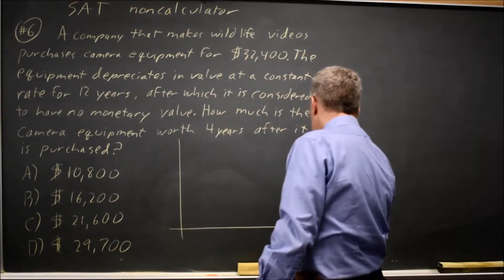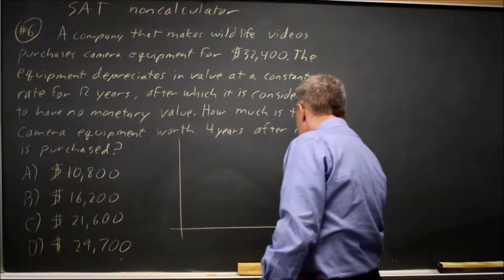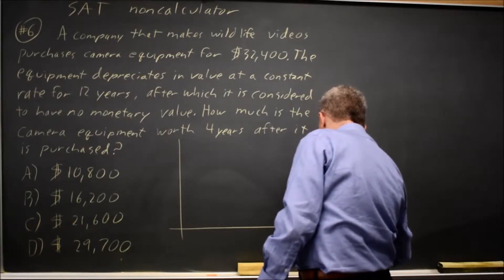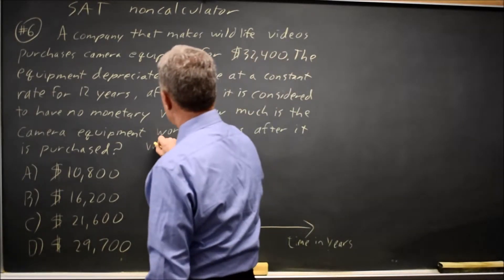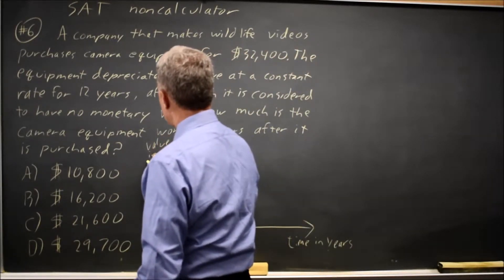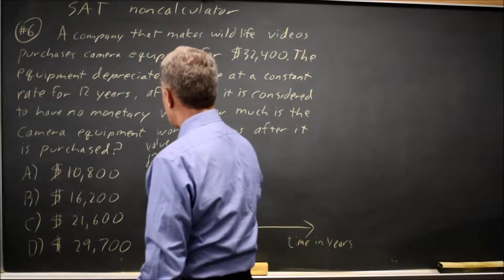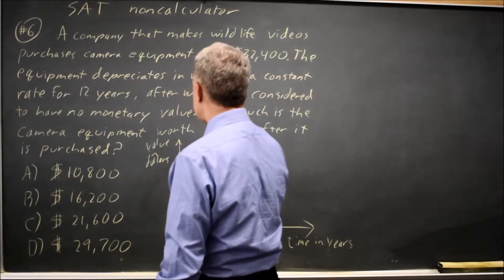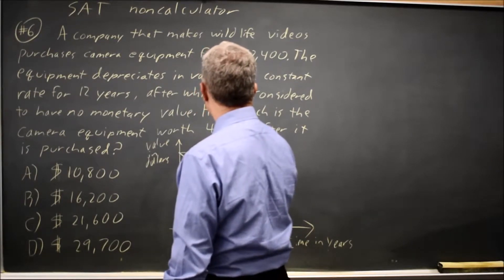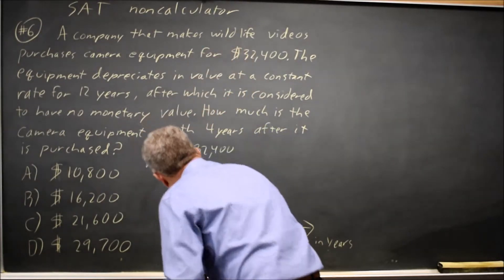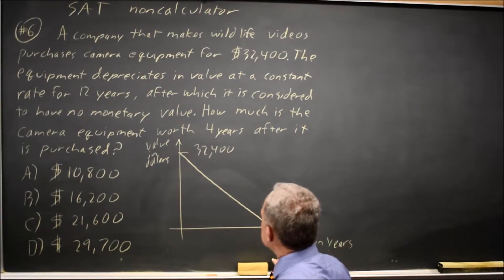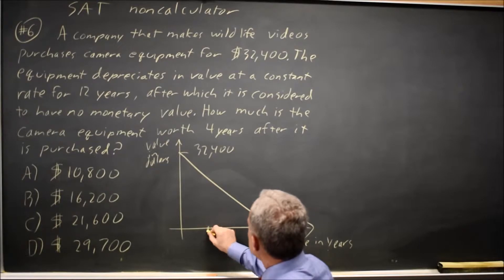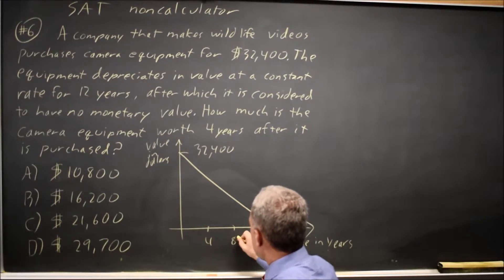So if I graph the value versus time, the value is linear, where this is the initial value, $32,400, and this is the ending time at 12 years. And they said linear, and they're asking about four years, so I'm going to divide it into four and eight.